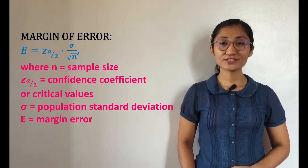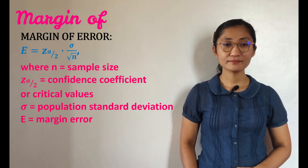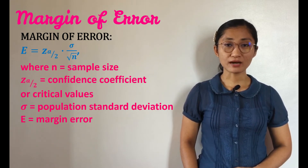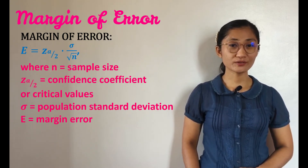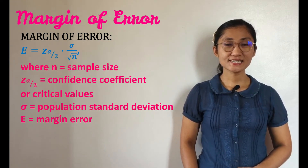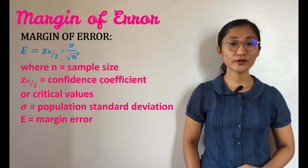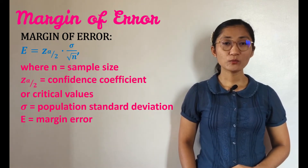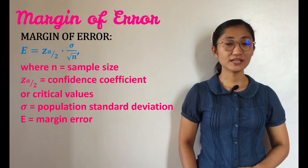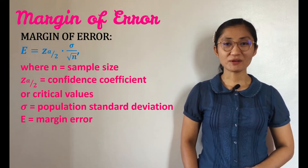To get the margin of error, we use the formula: capital E equals Z sub alpha over 2, times sigma over the square root of n, where n is the sample size, Z sub alpha over 2 is the confidence coefficient or critical value, sigma is the population standard deviation, and capital E is the margin of error.